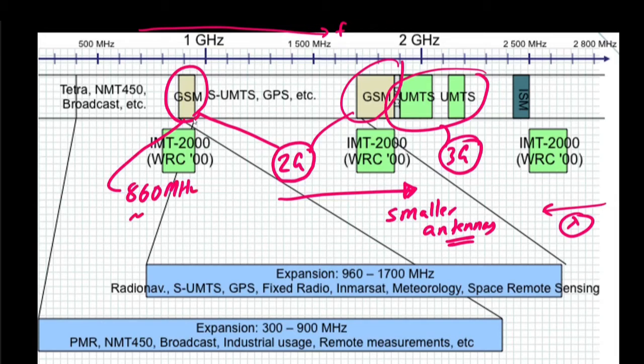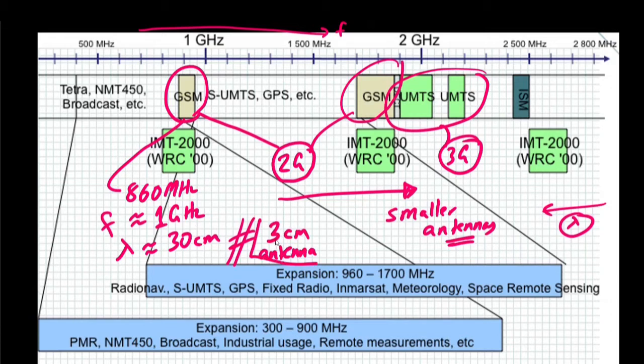We can simplify and approximate it to roughly 1 gigahertz. If this is our frequency, the wavelength is approximately equal to 30 centimeters. This means that for the 2G system we would need an antenna of 3 centimeters, and we can house this in our cell phone quite easily, so it is more practical.